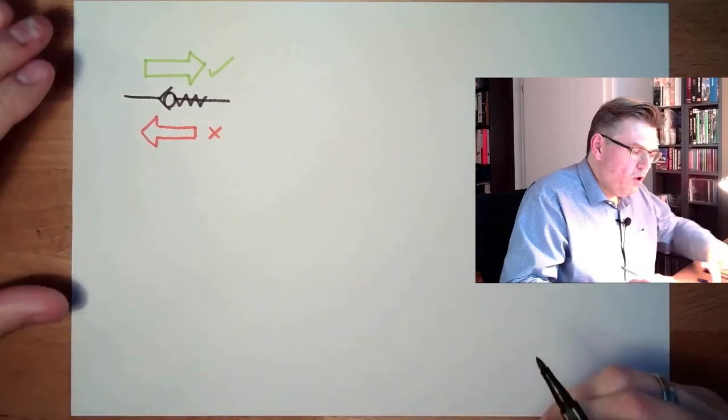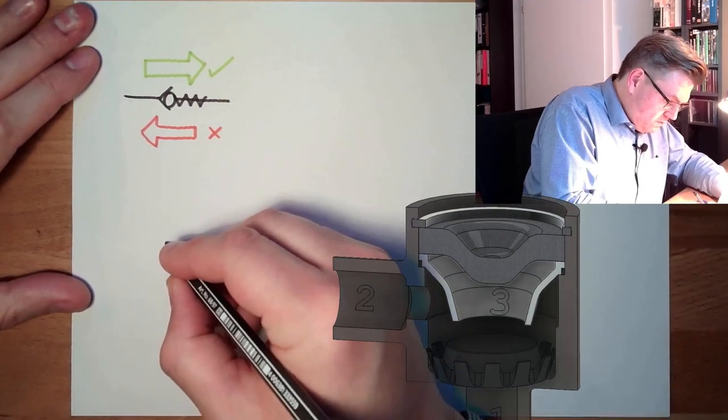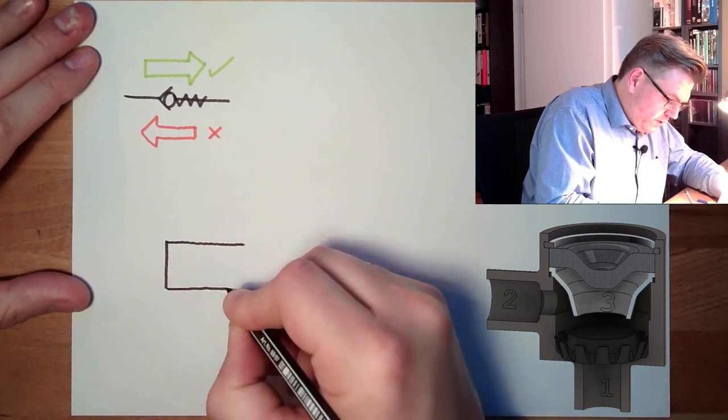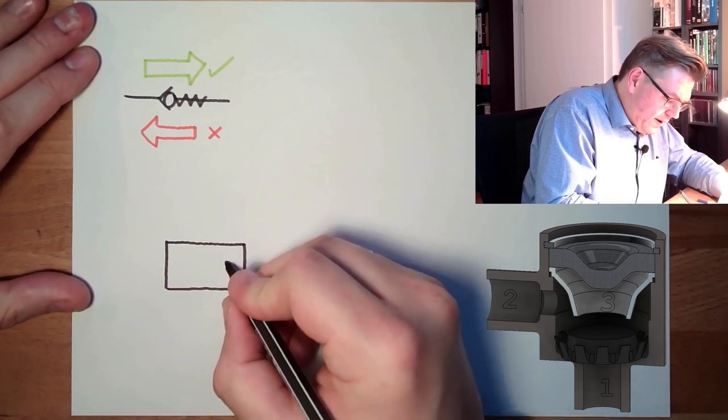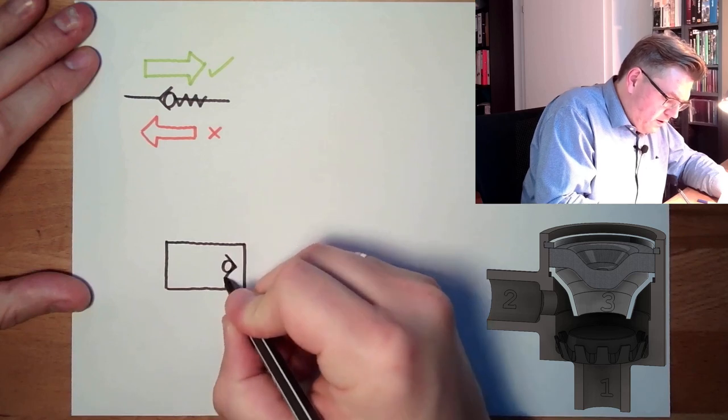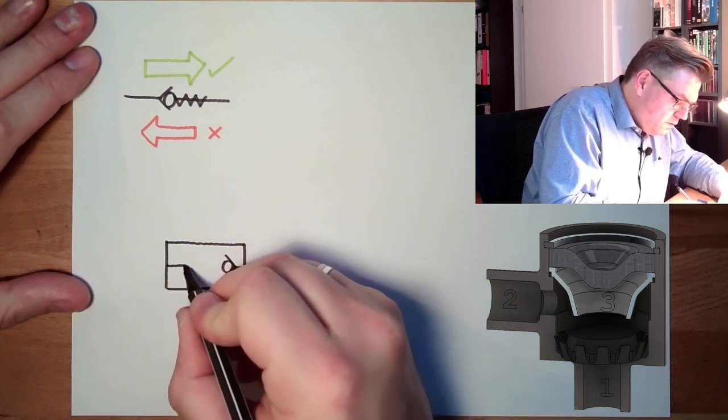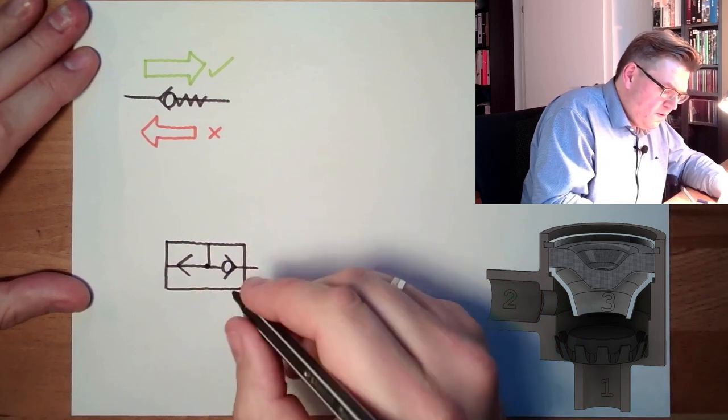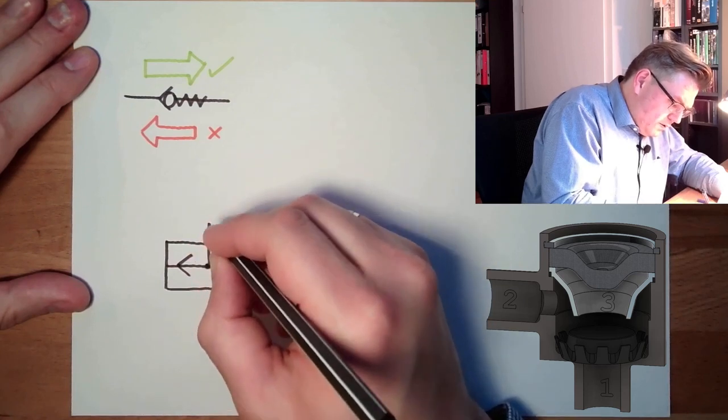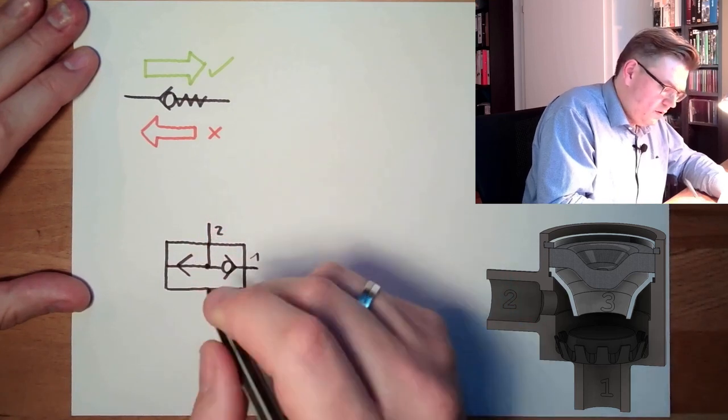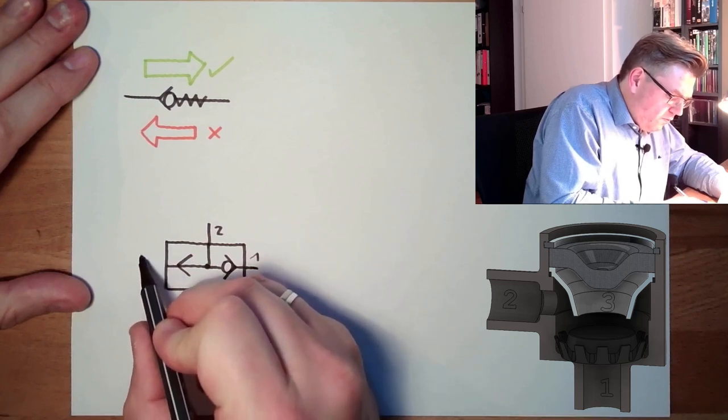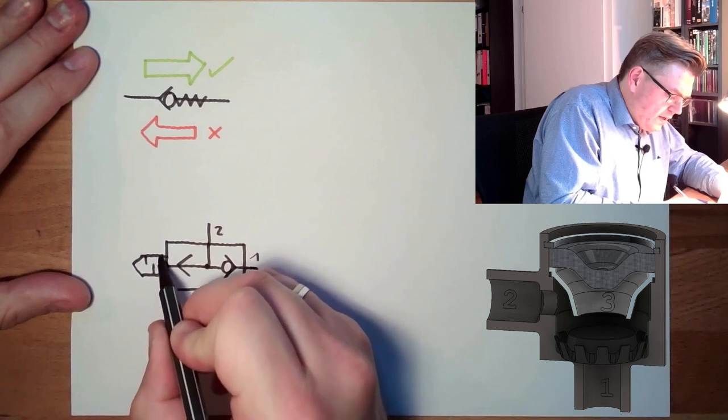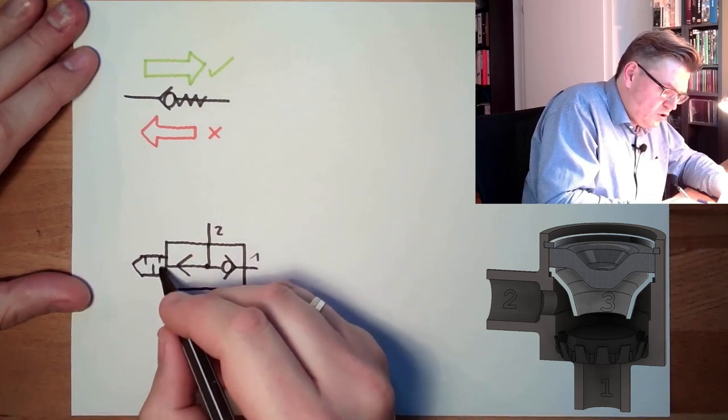Let's watch the symbol of the quick exhaust valve. It's looking like this, looking somehow like the symbol of a shuttle valve. So this here is the one connector, this here is the two connector, and here we have the three connector. And the three connector is even with noise cancelling in this case.